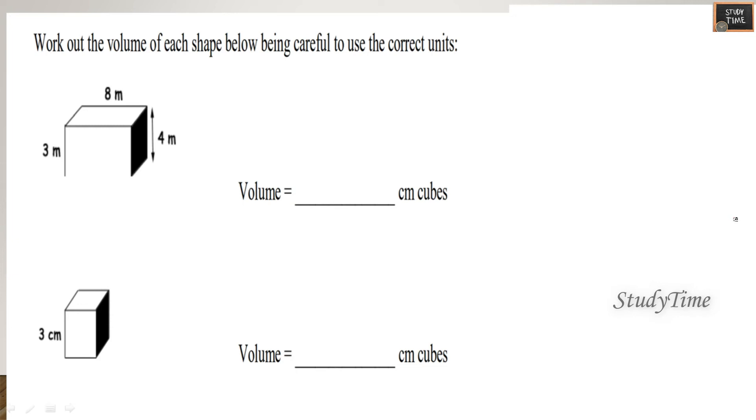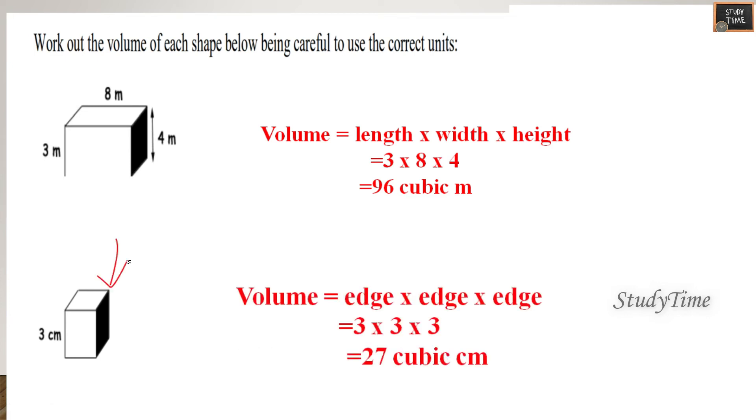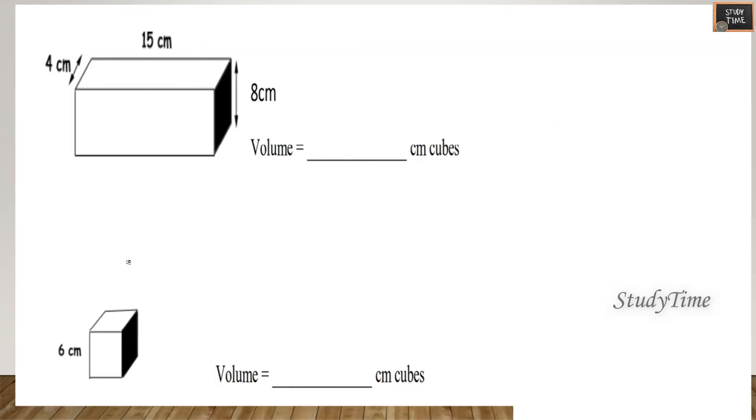Next, work out the volume for each shape. So you have to multiply here - volume is 3 into 8 into 4, that is 96 cubic meter. Next here it is only 3 centimeters given, so you have to multiply 3 into 3 into 3, that is 27 cubic centimeter. So this is another question: 4 into 15 into 8. The volume is 480 cubic centimeter. For next, it is 216 cubic centimeter.